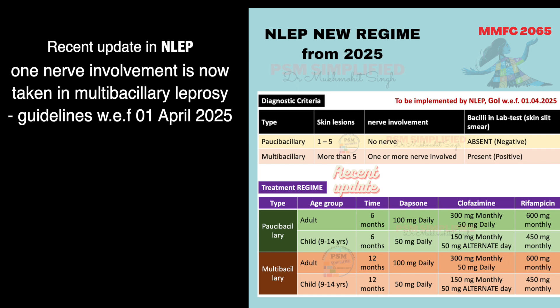So what is the revised definition for multibacillary? Multibacillary is six or more than six lesions with any nerve involvement, or there could be acid-fast bacilli from any skin slit smear examination. All of this is criteria for multibacillary. This is the new update from 1st April 2025.